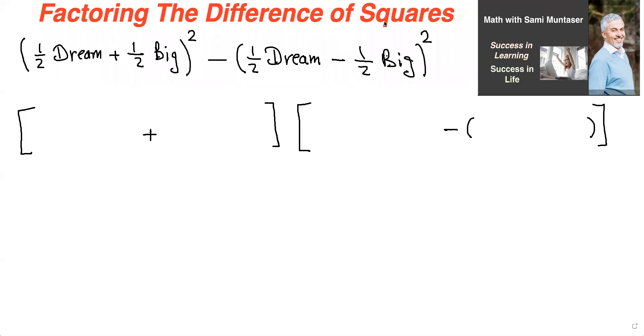So here it is, factoring the difference of squares. This is a perfect square right here because of the square there, and the same for this because you have a square there. These are two perfect squares. It's a binomial. This is one term and this is the second term, and it's a minus in the middle. So therefore you could factor it using the difference of squares.